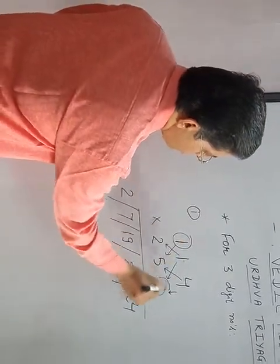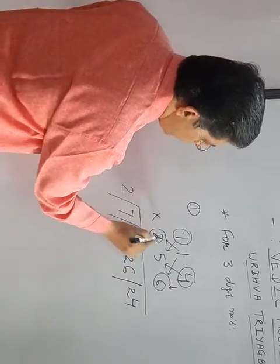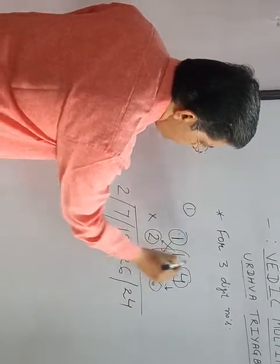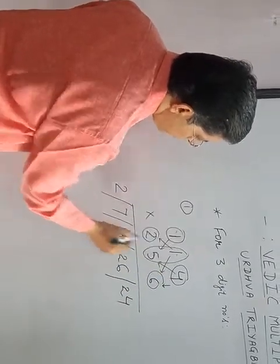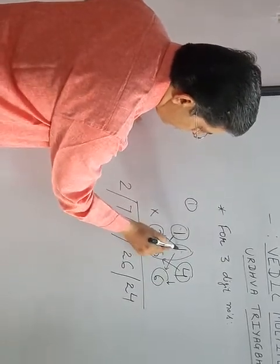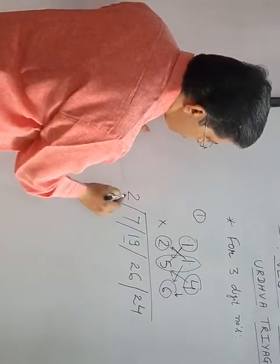Then third one is this cross. This multiply by this. This is 6. 4 times 2 is 8. 8 plus 6 is 14. And 1 times 5 is 5. 14 plus 5 is 19. Then this cross. 1 times 5 is 5, 1 times 2 is 2. 5 plus 2 is 7. And 1 times 2 is 2.